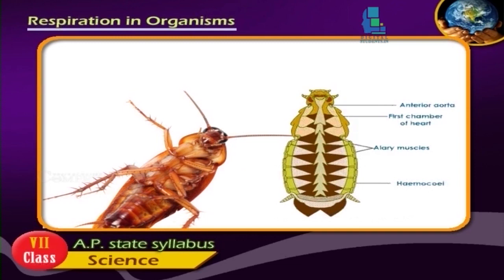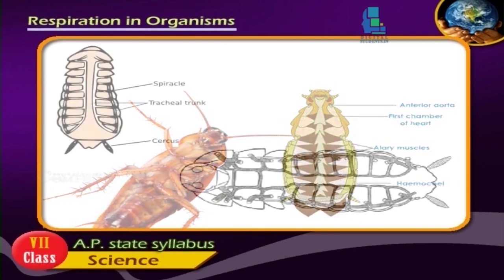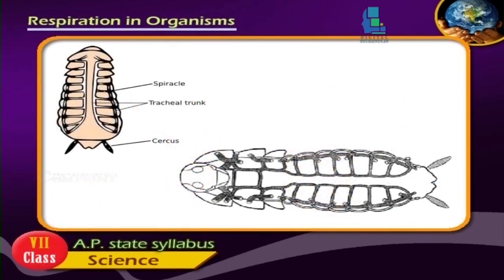These holes are called spiracles, which help the cockroaches to breathe. The network of respiratory tubes called trachea takes air from these spiracles, circulates it throughout the body, collects it back, and sends it out through these spiracles.